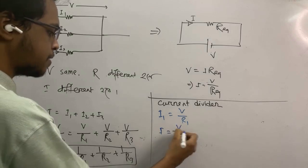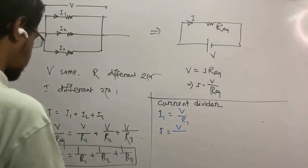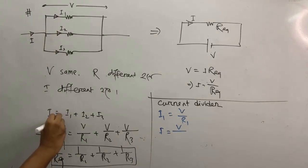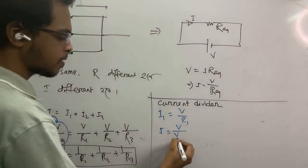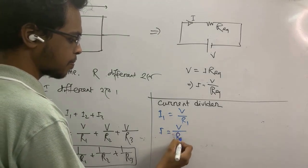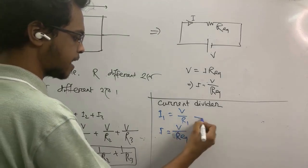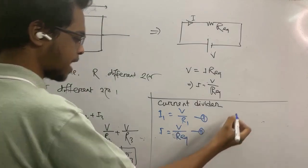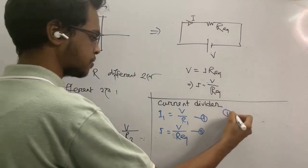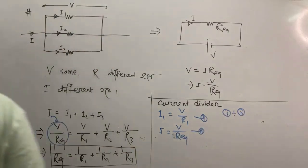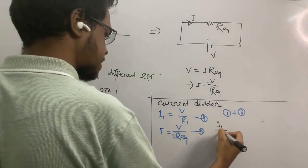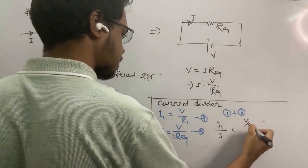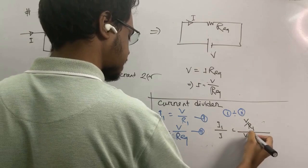And i is equal to v by R equivalent. So i1 divided by i is equal to v by R1 divided by v by R equivalent.